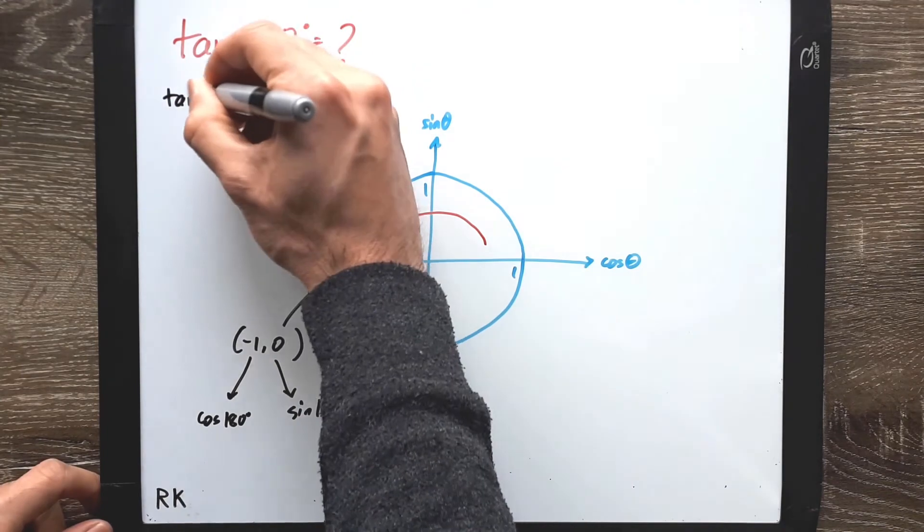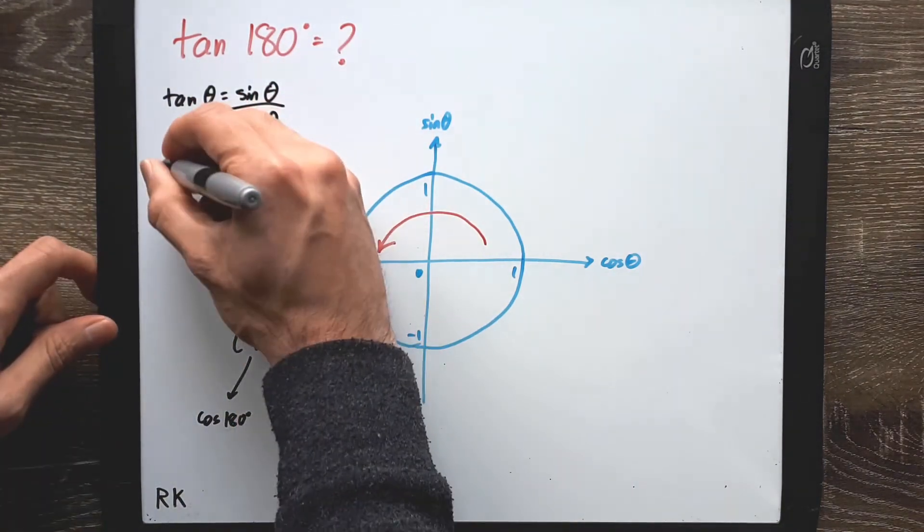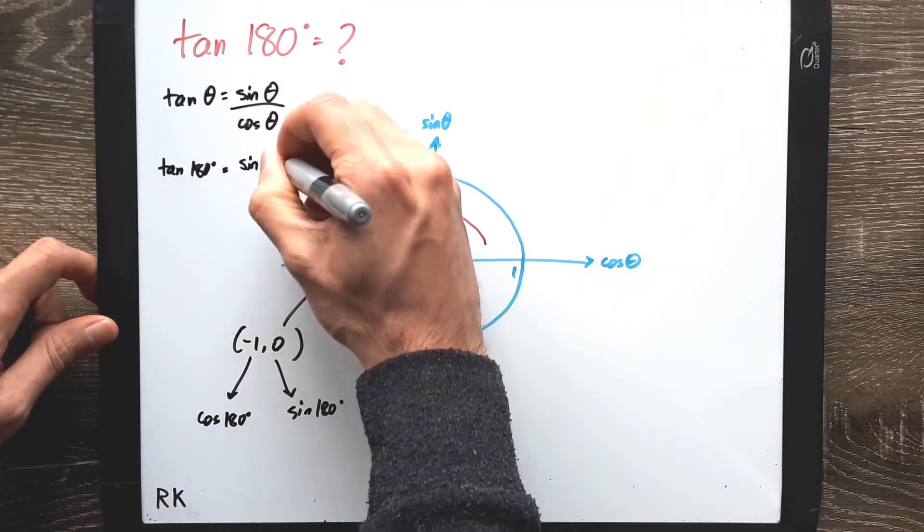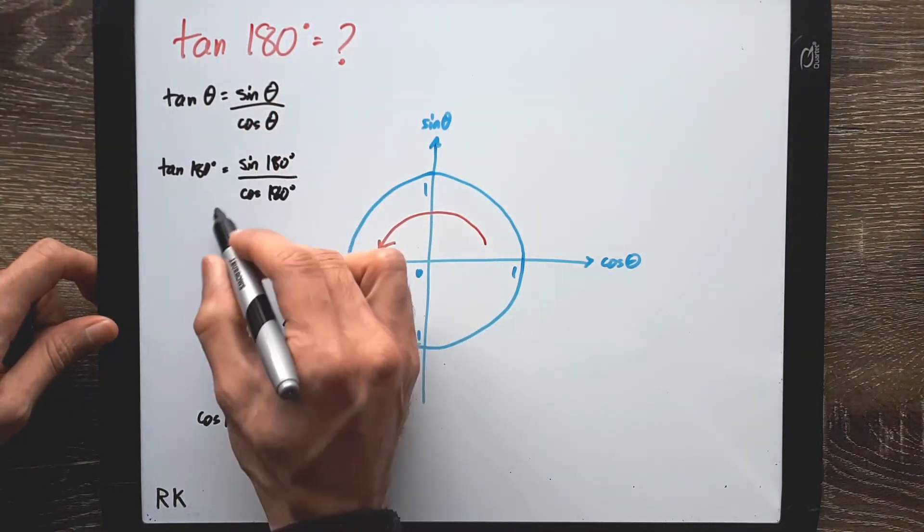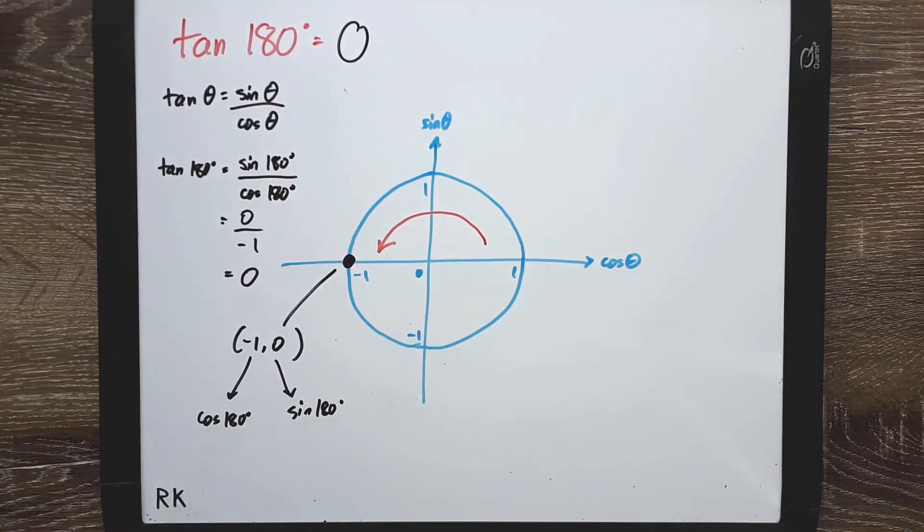However, tangent can be found by dividing sin over cos. So all you need to do is use both values and divide them off. So 0 divided by negative 1 gives you 0. So tangent 180 equals 0.